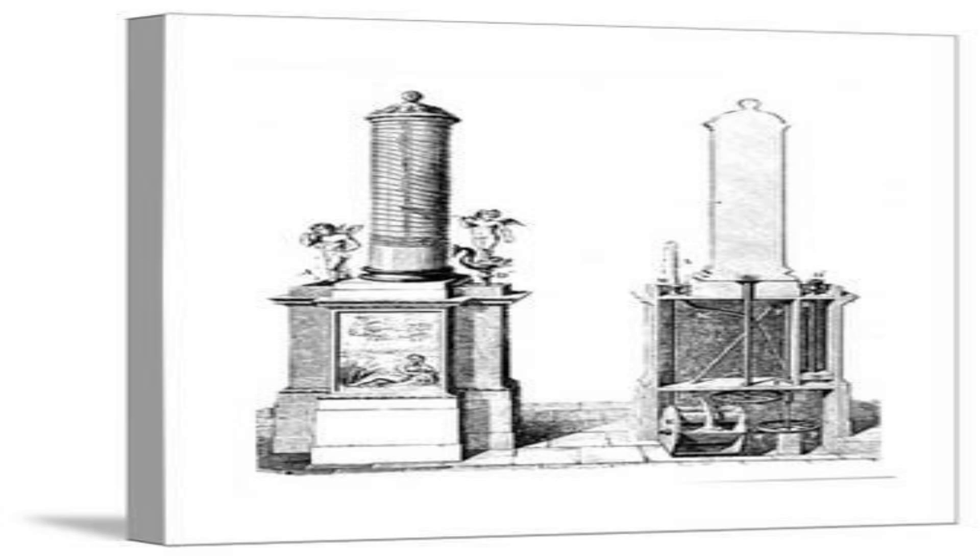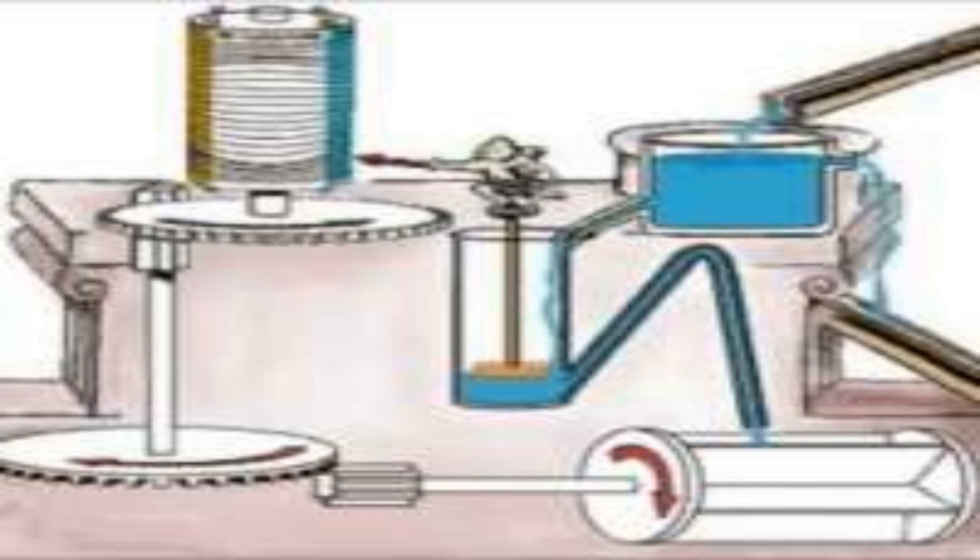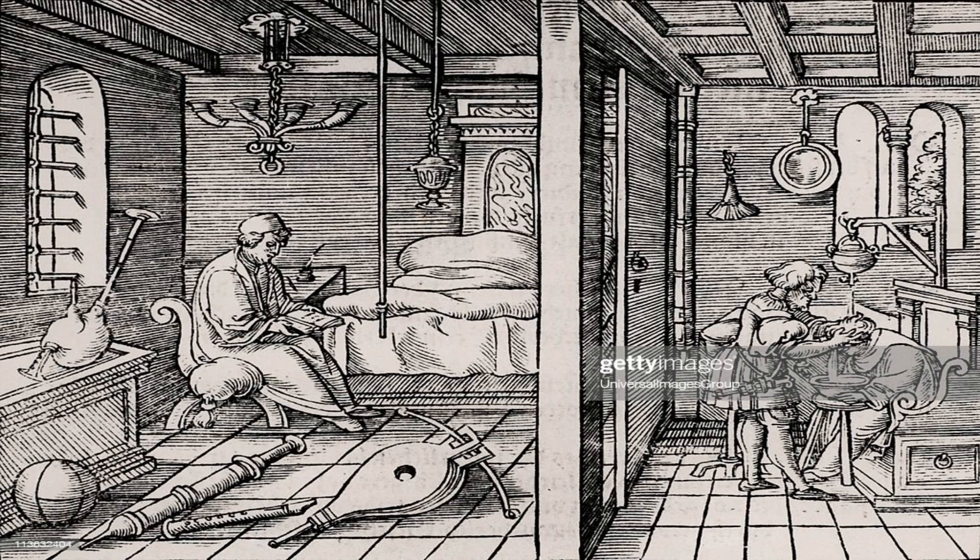Religious sacrifices. The klepsidra was used to time the rituals and ceremonies of various religions, such as the ancient Egyptian, Greek, and Roman cults. It was also used to mark the sacred hours and days of worship and to synchronize the prayers and offerings of different temples and shrines.